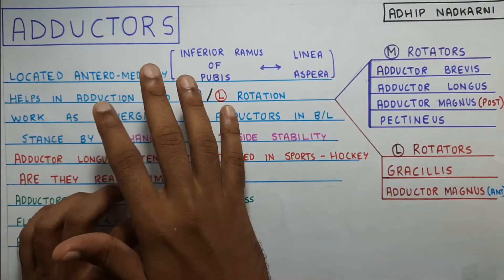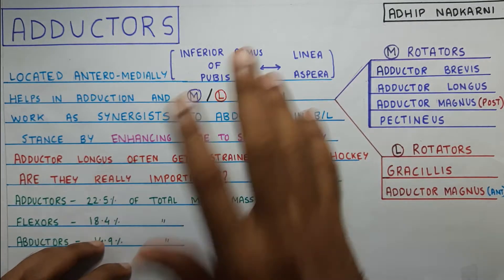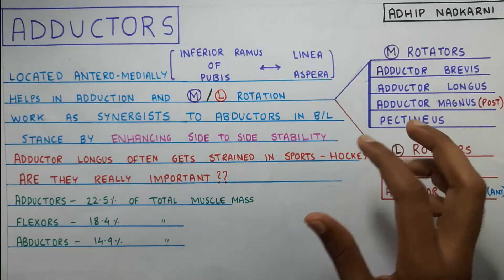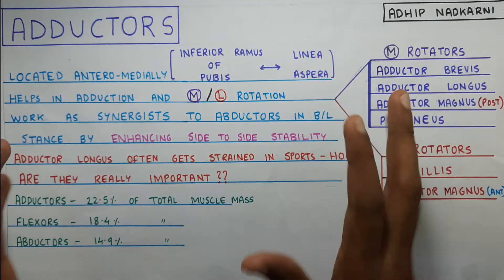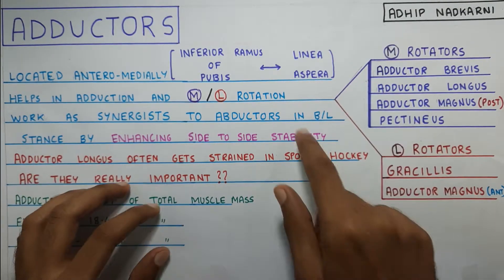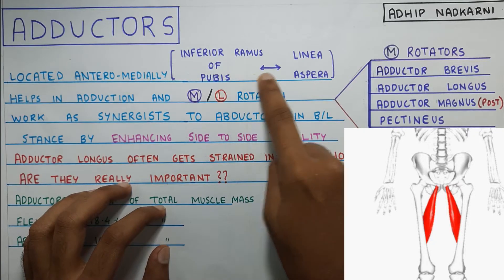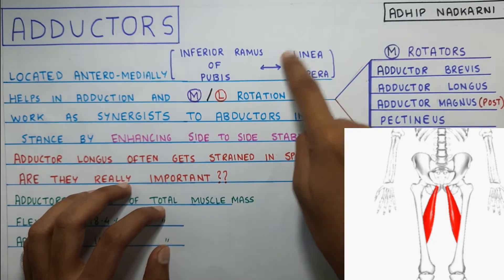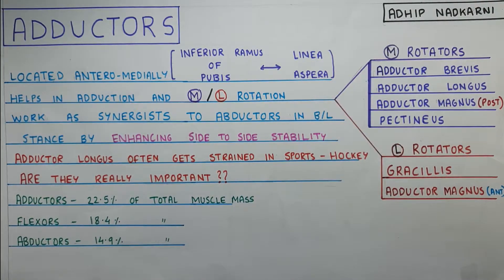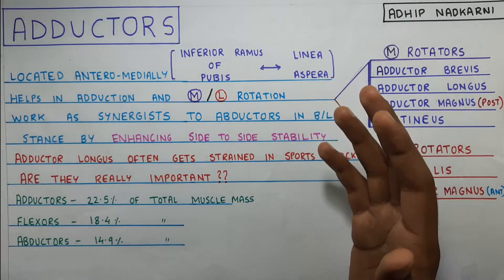Let's look at the attachments of the adductors. There are many adductors with varying attachments, but a general place where they are attached is the inferior ramus of the pubis, and they go to the linea aspera and attach on the femur.